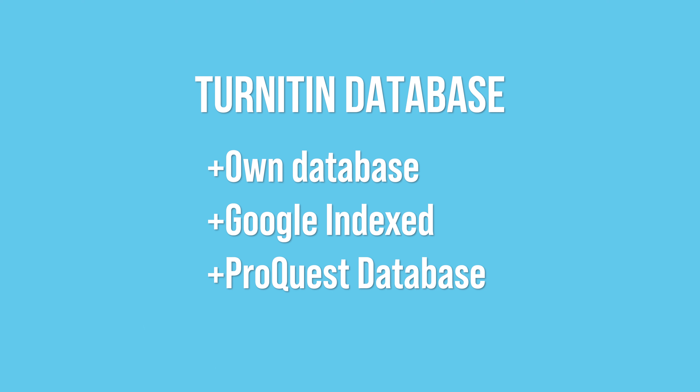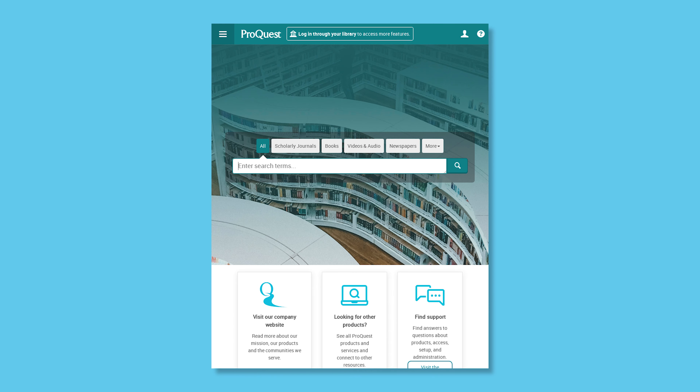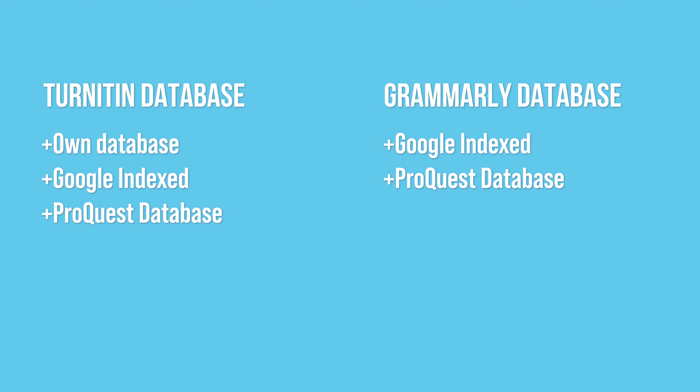In Grammarly, there is nothing like that. Whatever you are writing, you can check it on your own including grammatical mistakes. Importantly, Grammarly now saves your manuscript into their database. They use the ProQuest database, which is also huge, and Google indexed database — but they don't have their own database. It's important to note that most research paper publications use the ProQuest database to check similarity or plagiarism, so Turnitin's database is much larger than that of Grammarly.